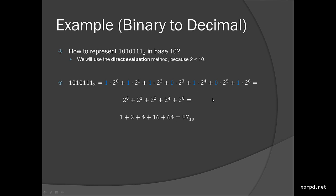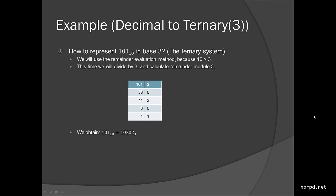At least I hope that you can. If you find it difficult for some reason, you are allowed to use a calculator — it's not going to damage your understanding in any way. Another example, a bit stranger, would be to convert from decimal to ternary, which is base 3. This time we are trying to represent the number 101 from base 10 and convert it to base 3, which is also called the ternary system or the ternary numeric system.